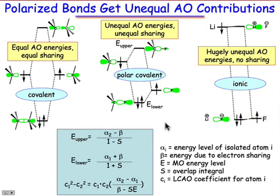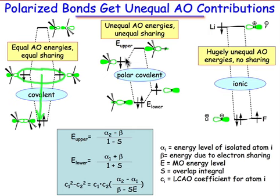Notice that the energy associated with the orbital interaction depends on how closely matched the energies of the atomic orbitals are. When the atomic orbital energies are perfectly matched, we have the largest orbital interaction energy. When the orbital energies are similar but different, as in the case of a polar covalent bond, the orbital interaction energy is smaller.